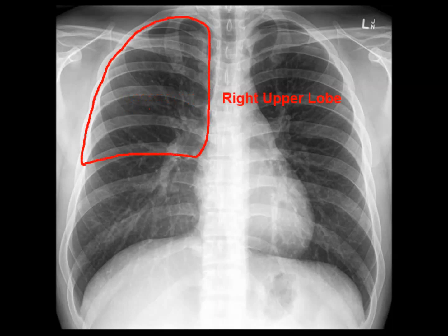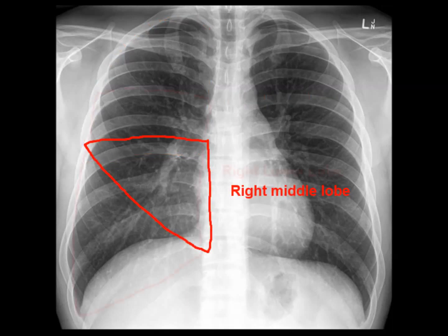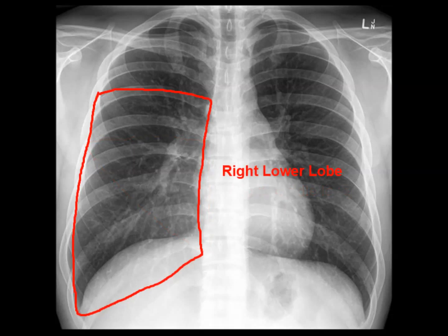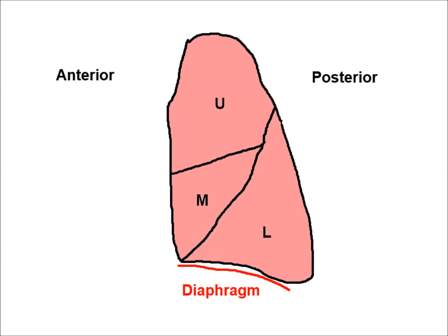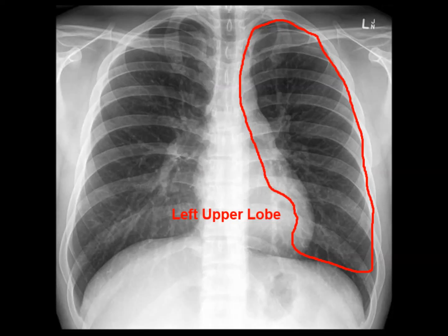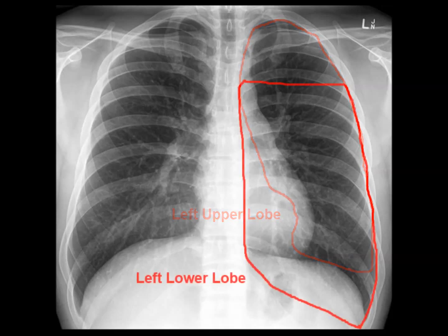Now onto the lung fields and the lobes. First the right upper lobe, then the right middle lobe, which touches the right heart border, and the right lower lobe, which touches the right hemidiaphragm. There is some overlap between lobes, particularly between the lower lobe and the other two, because of the three-dimensional structure of lungs. The lower lobe occupies a space posterior to the other two lobes and also to the dome of the diaphragm. The left is a bit easier with only two lobes — the upper lobe takes up almost the whole lung field and touches the left heart border, while the left lower lobe shares a border with the left hemidiaphragm.